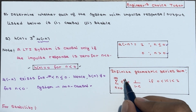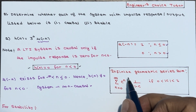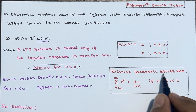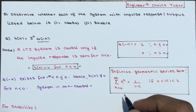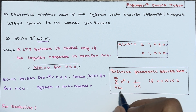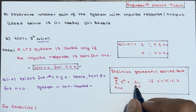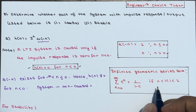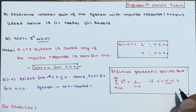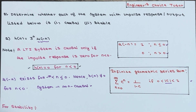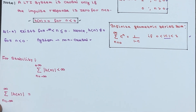You should also be aware of the infinite geometric series sum formula: the summation of c to the power n, where n ranges from 0 to infinity, equals 1 divided by (1 minus c), provided that the absolute value of c is greater than 0 and less than 1. We are going to use this formula to check causality and stability.